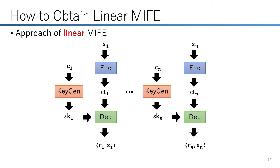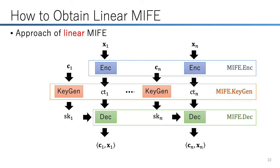Before moving to our quadratic MIFE construction, we briefly recall how linear MIFE is obtained in previous works. Basically, all linear MIFE schemes follow this blueprint: a linear MIFE runs N parallel instances of a single-input linear FE, and each set of N algorithms can be seen as each algorithm of MIFE. Since multi-input linear functions can be computed by summation of single-input linear functions, this scheme already satisfies correctness. However, this construction leaks every linear function value of each slot. To prevent this, we make each slot output the linear function value masked by an unknown term R_i, where the summation of the masking terms can be removed by a decryptor.